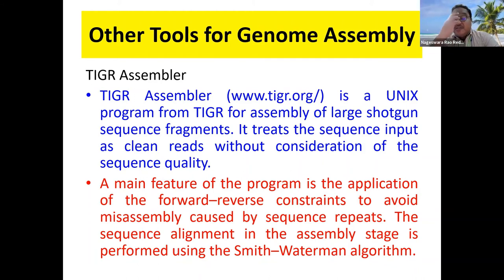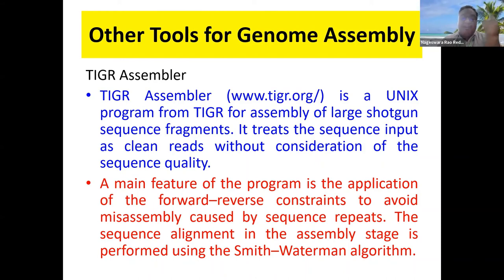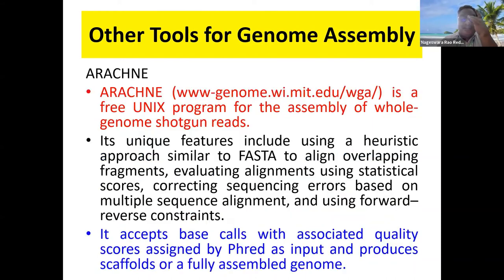The TIGR assembler operates without concentrating on sequence quality. The main thing is that forward and reverse constraints — as shown previously — are taken into consideration to remove misassembly.